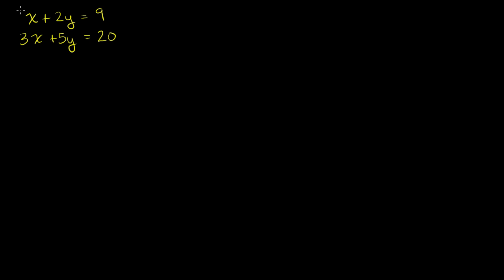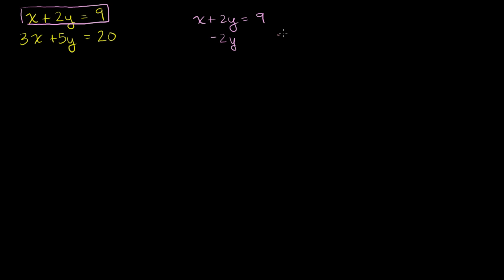I'm going to use one of the equations to solve for one of the variables, and then substitute back in for that variable. So let me solve for x using the top equation. The top equation says x plus 2y is equal to 9. I want to solve for x, so let's subtract 2y from both sides, and I'm left with x is equal to 9 minus 2y.